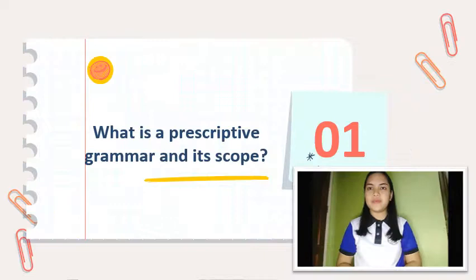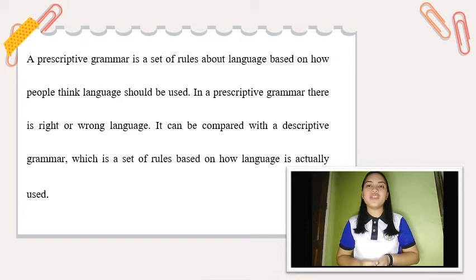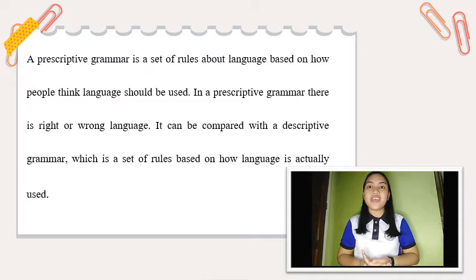What is prescriptive grammar and its scope? A prescriptive grammar is a set of rules about language and how people think language should be used. According to linguists L.C. De Pryterie and Chand Langford, there is a right or wrong language when we talk about prescriptive grammar. A person who dictates how people should write or speak is called a prescriptivist or a prescriptive grammarian.